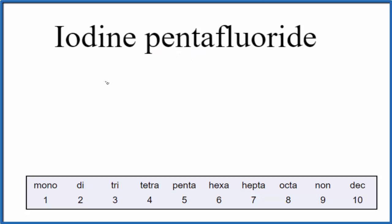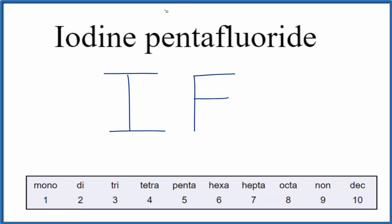So first we'll write I for iodine, and then fluoride — that's from fluorine — we write F. For the fluoride, we see this penta, and we know that penta is 5, so we have 5 fluorine atoms.